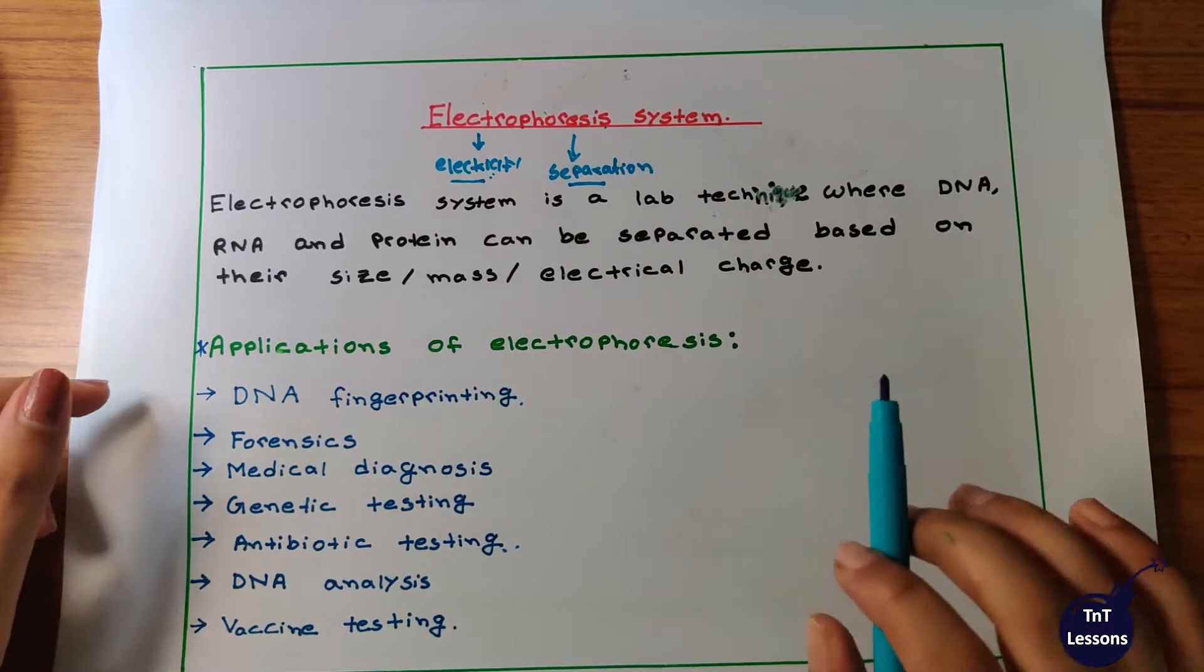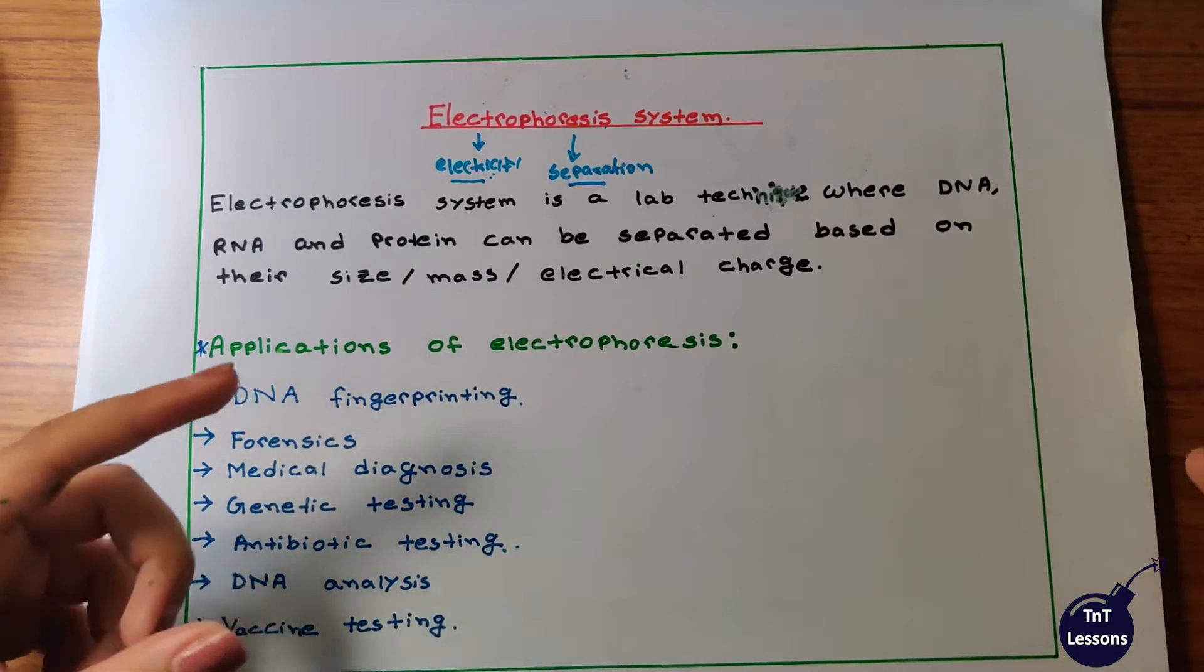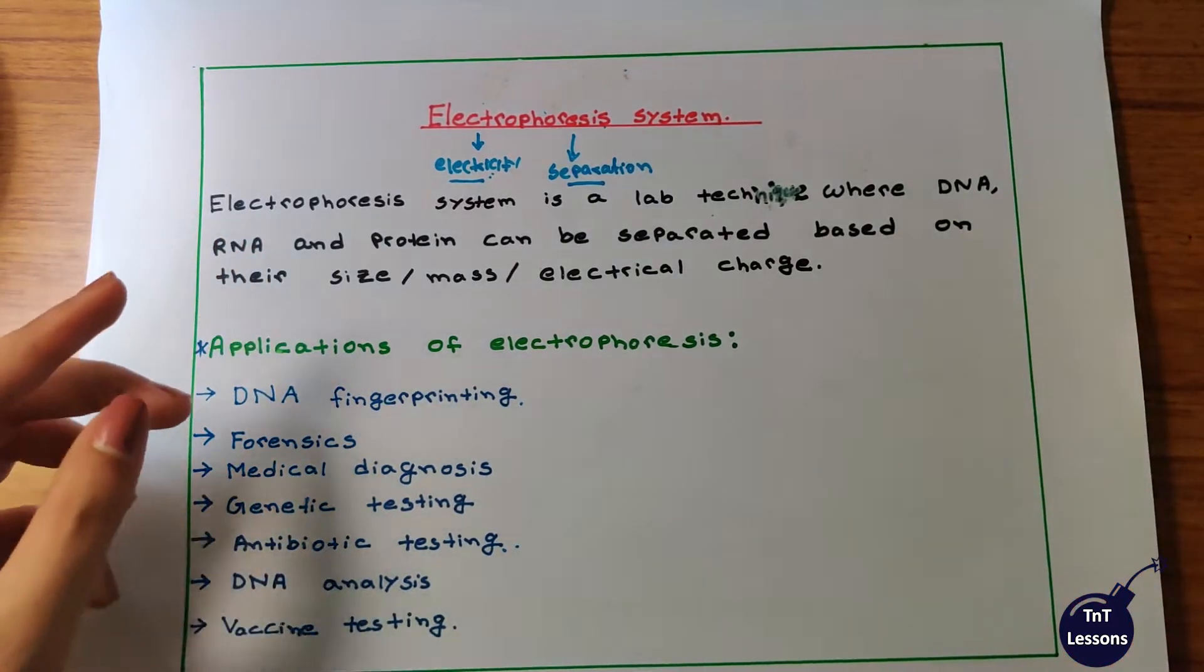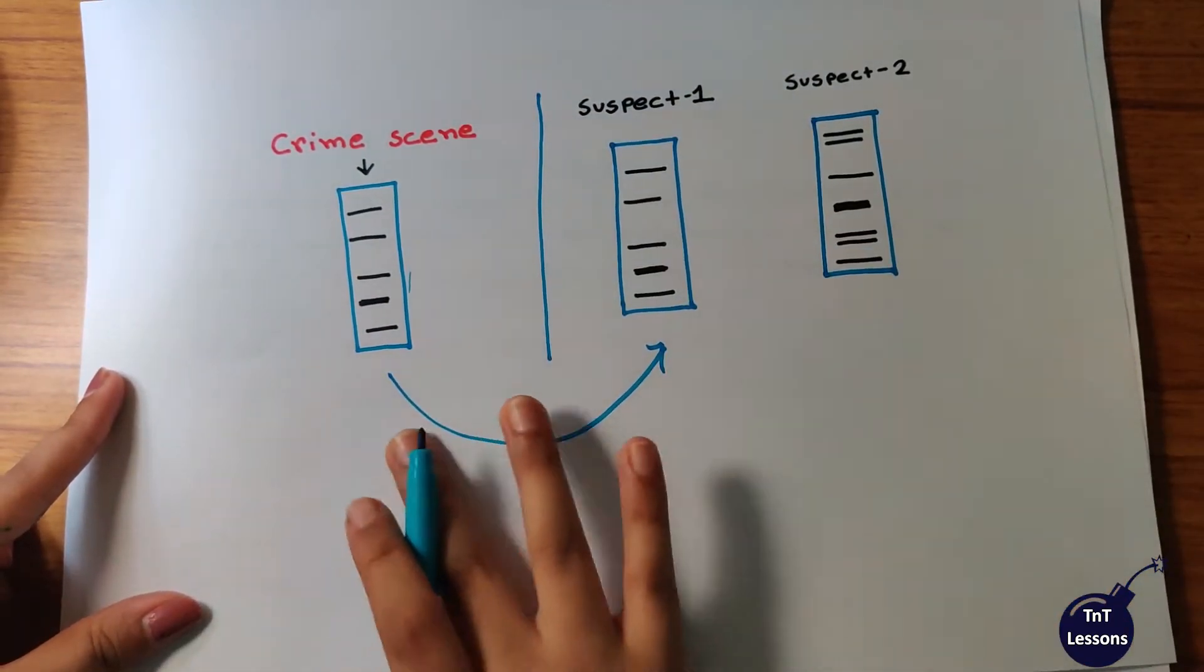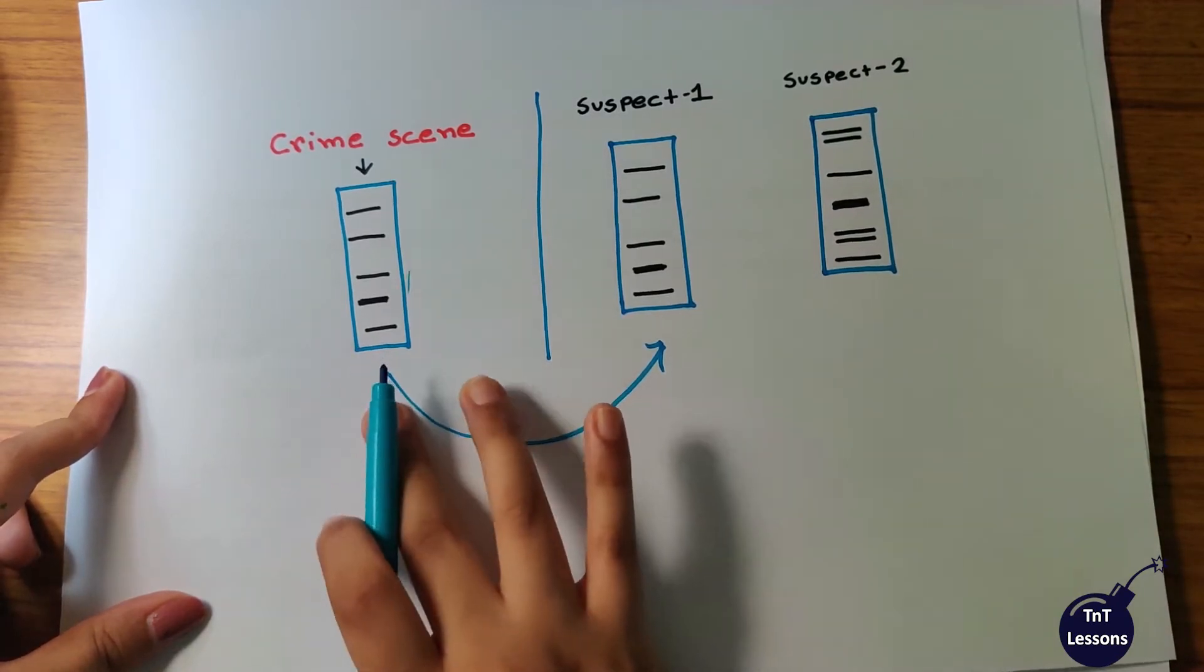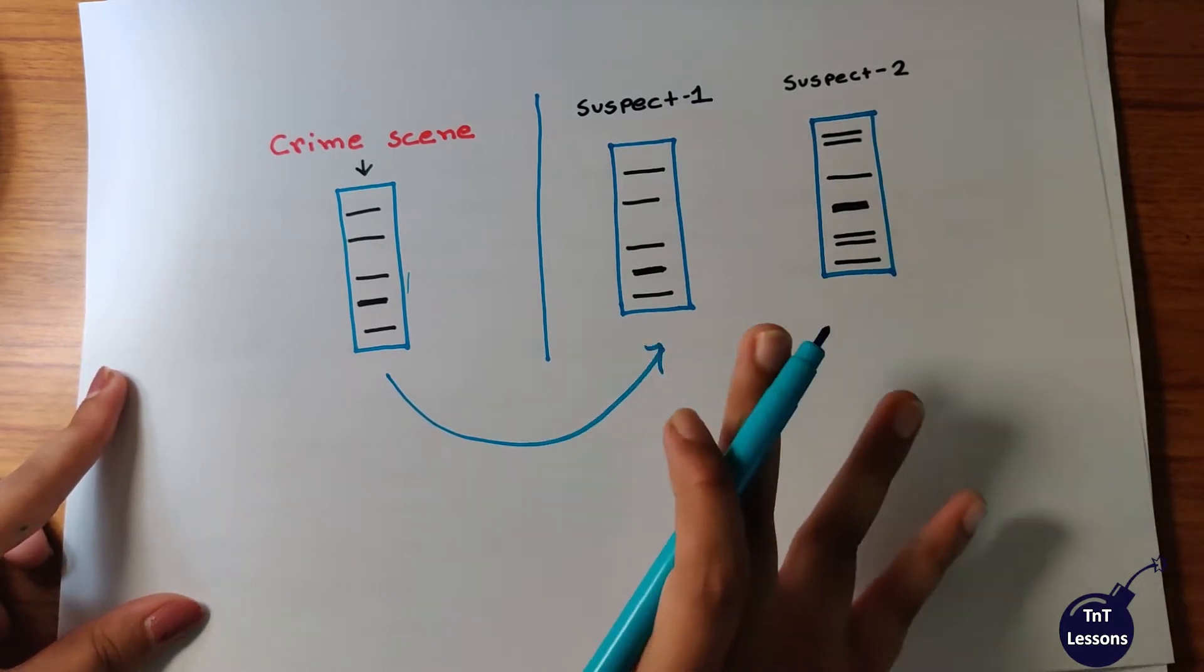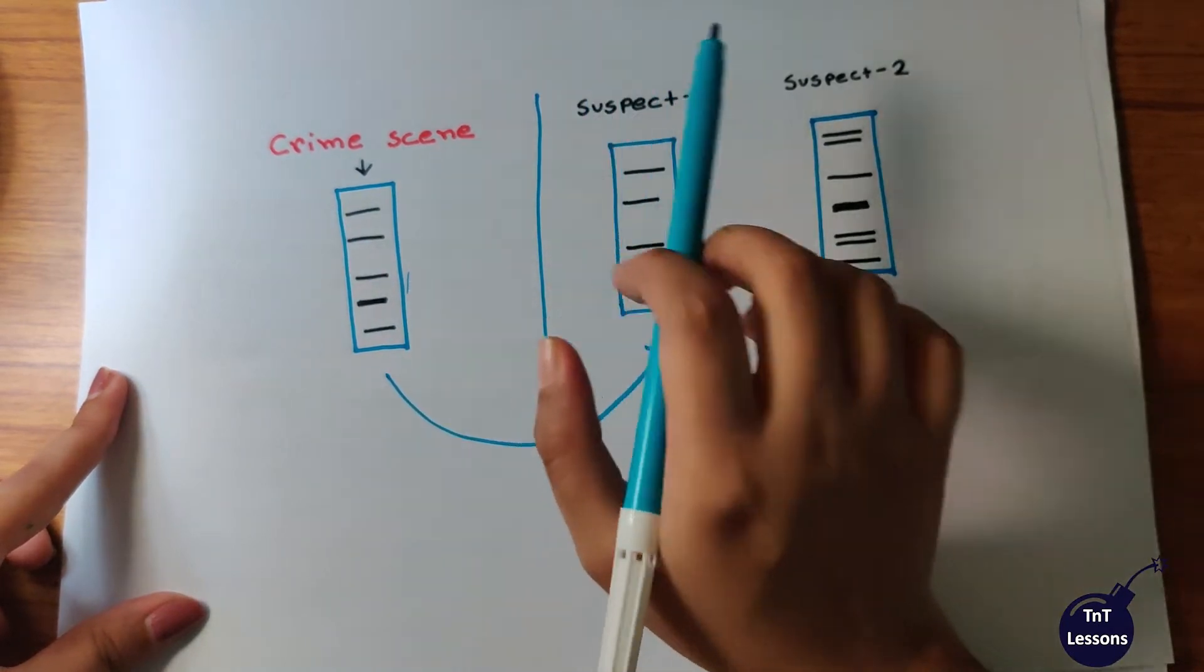When we use forensics and electrophoresis system, the crime scene has a criminal sample and the suspect sample. In the lab, the suspect and criminal DNA samples have DNA fragments. If the DNA fragments match, we can conclude that the suspect was at the crime scene, or the suspect was the criminal.